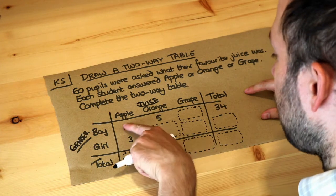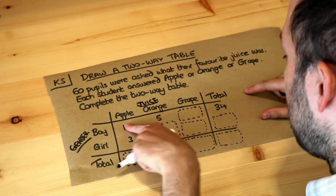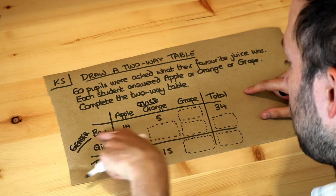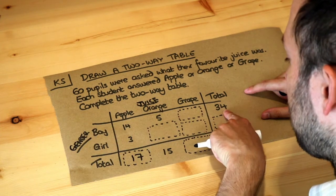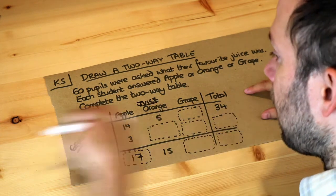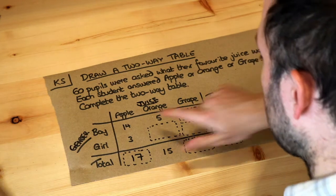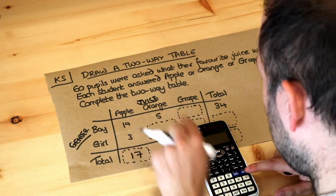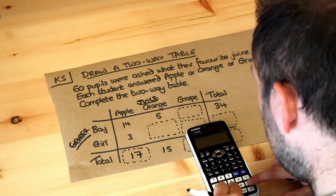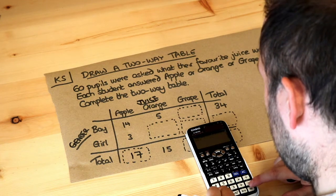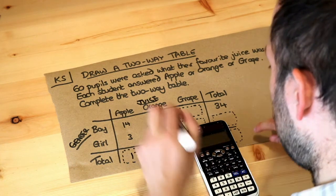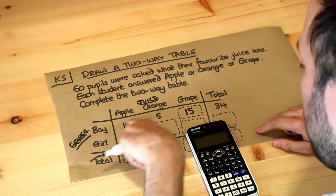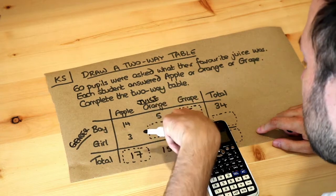We also know that the total number of boys is 34. So if we subtract the 14 and the 5 from 34 — 14 plus 5 is 19 — then 34 minus 19 is equal to 15. So we know there were 15 boys who liked grape.